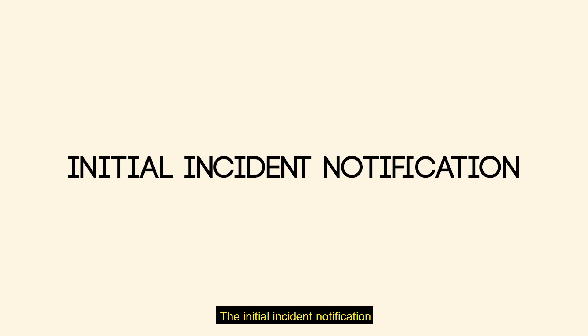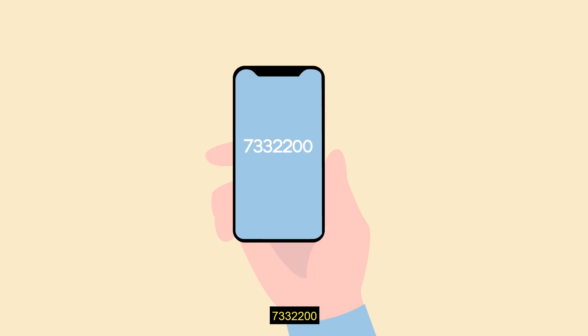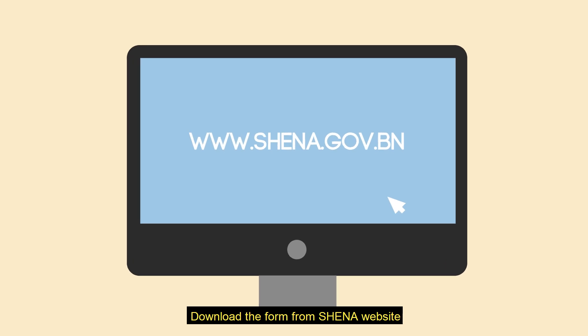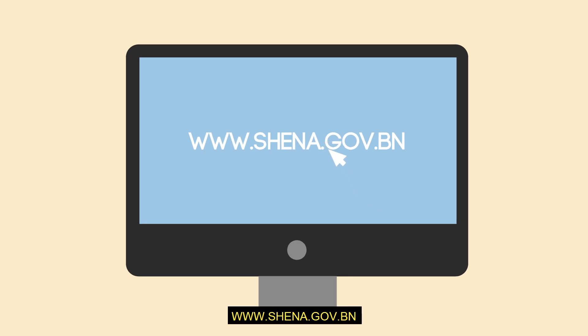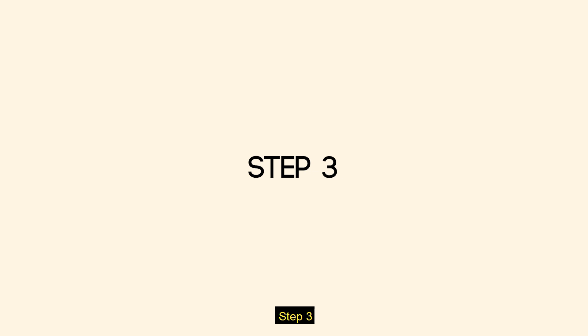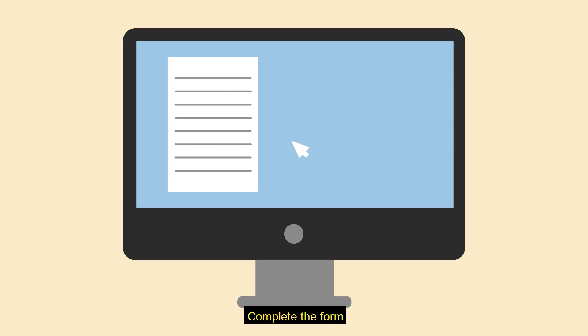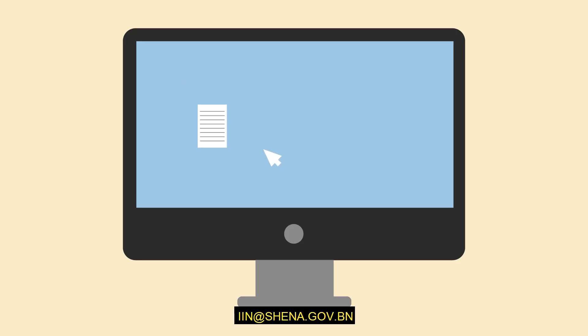The Initial Incident Notification process: Step 1 — Call the SHENA Duty Phone at 733-2200. Step 2 — Download the form from the SHENA website at www.shena.gov.bn. Step 3 — Complete the form and email it to IIN at shena.gov.bn.